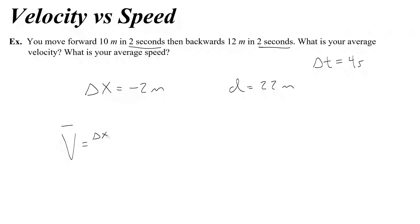Well when I calculate the average velocity, which depends on displacement, I'm going to get negative 2 meters over 4 seconds, which is one-half, or negative 0.5. That's my average velocity. But the speed is going to be the distance over the time. So that's going to be 22 meters over 4 seconds, which is 5.5 meters per second.